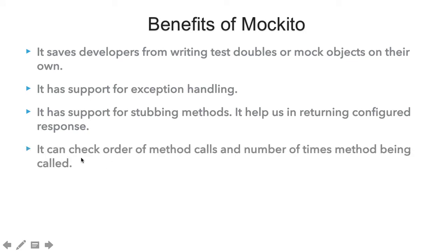Mockito can also check the order of method calls and the number of times a method is called on the mock dependencies. The mock objects provided by Mockito have the capability to track the order of method calls and how many times a method was called on the mocked object, so we can verify that information later.